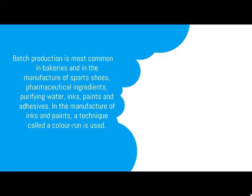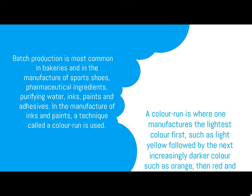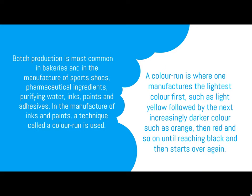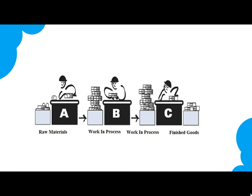In the manufacturing of ink and paints, a technique called color run is used. A color run is where the manufacturer starts with the lightest color first, such as light yellow, followed by the next increasingly darker color such as orange, then red, and so on until reaching black, then starts over again. This is an example of batch production where raw materials go through work-in-process inventory and finally finished goods are manufactured in the batch.